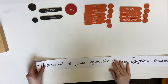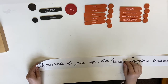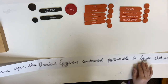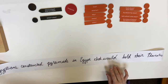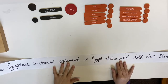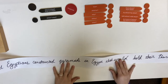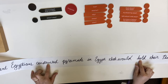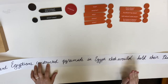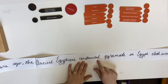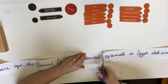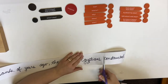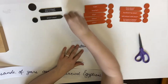So we need to find the predicate. 'Thousands of years ago, the ancient Egyptians constructed pyramids in Egypt that would hold their pharaohs.' Technically you can see two different verbs in here: 'hold' and 'constructed.' We have to pick the one that makes the most sense to be the main verb. I'm going to tell you this one — constructed is the verb that we want. This is our predicate.